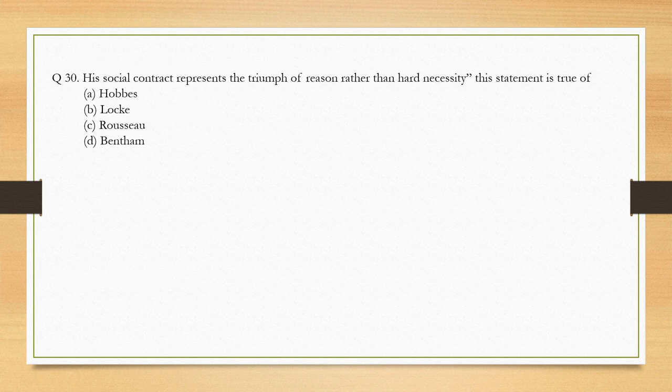His social contract represents the triumph of reason rather than hard necessity — this statement is true of: Hobbes, Locke, Rousseau, or Bentham? You should remember that social contract theory is given by Hobbes, Locke, and Rousseau, and you should not get confused about them. The correct option is option A: Hobbes.